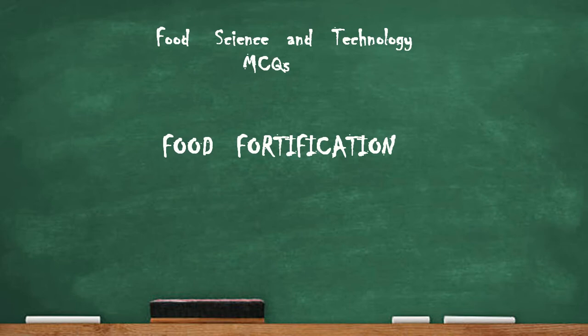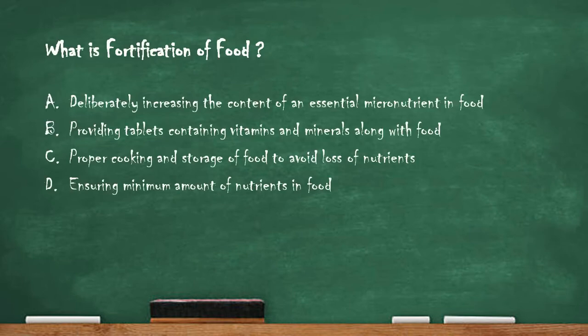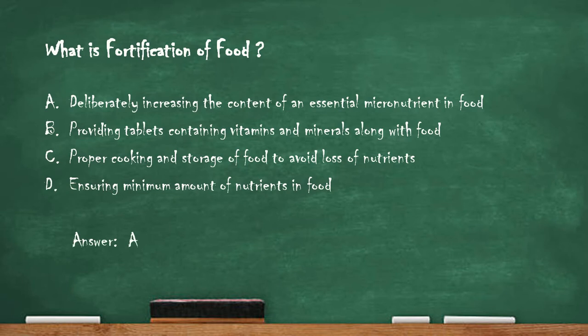Let's start. What is fortification of food? Option A: deliberately increasing the content of an essential micronutrient in food. Option B: providing tablets containing vitamins and minerals along with food. Option C: proper cooking and storage of food to avoid loss of nutrients. Option D: ensuring minimum amount of nutrient in food. The right answer is option A — deliberately increasing the content of an essential micronutrient in food.